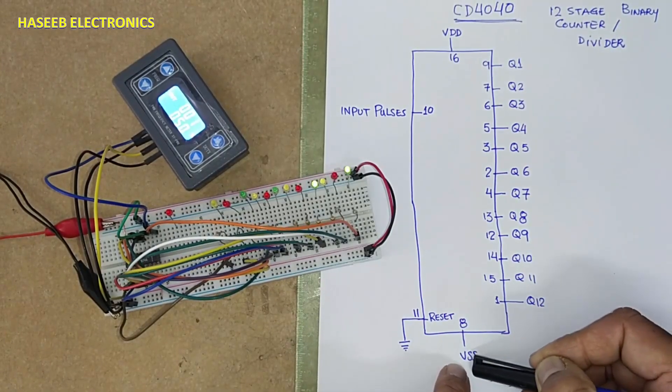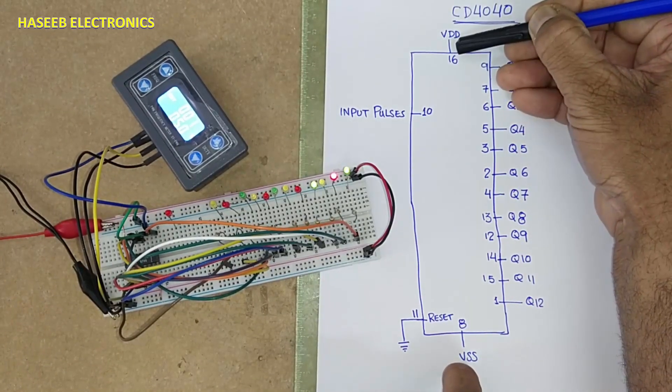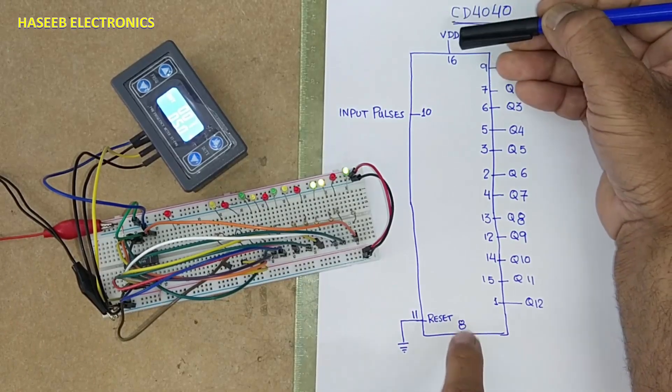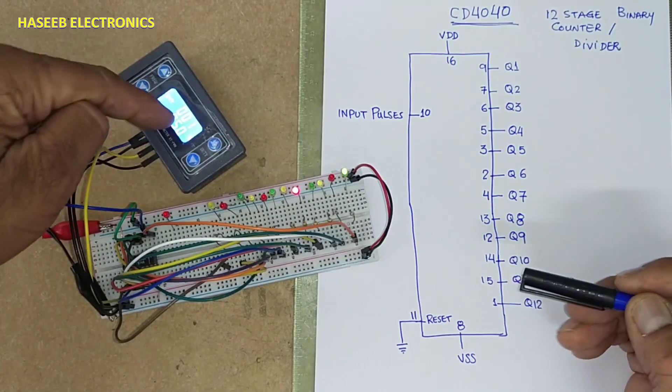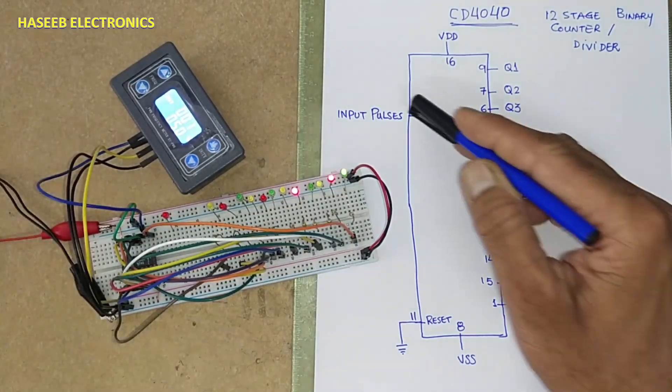Pin number 8 VSS. I applied 5V at VDD, VSS ground. I connected one hertz 50% signal to input pulse.